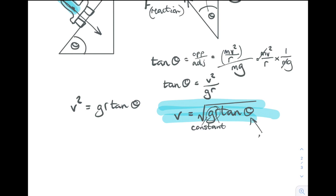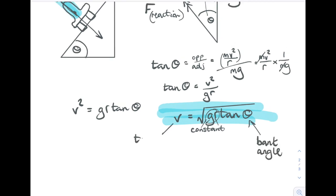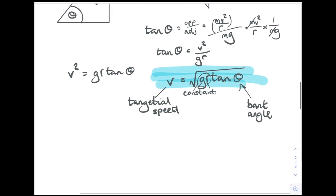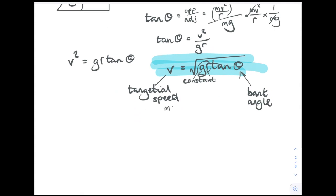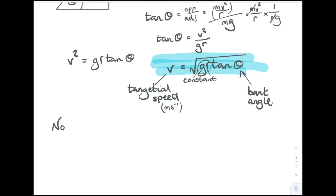So theta is your bank angle, then v is your tangential speed around the track. The bigger the angle is, the bigger your bank angle, then the faster you can go around the track.